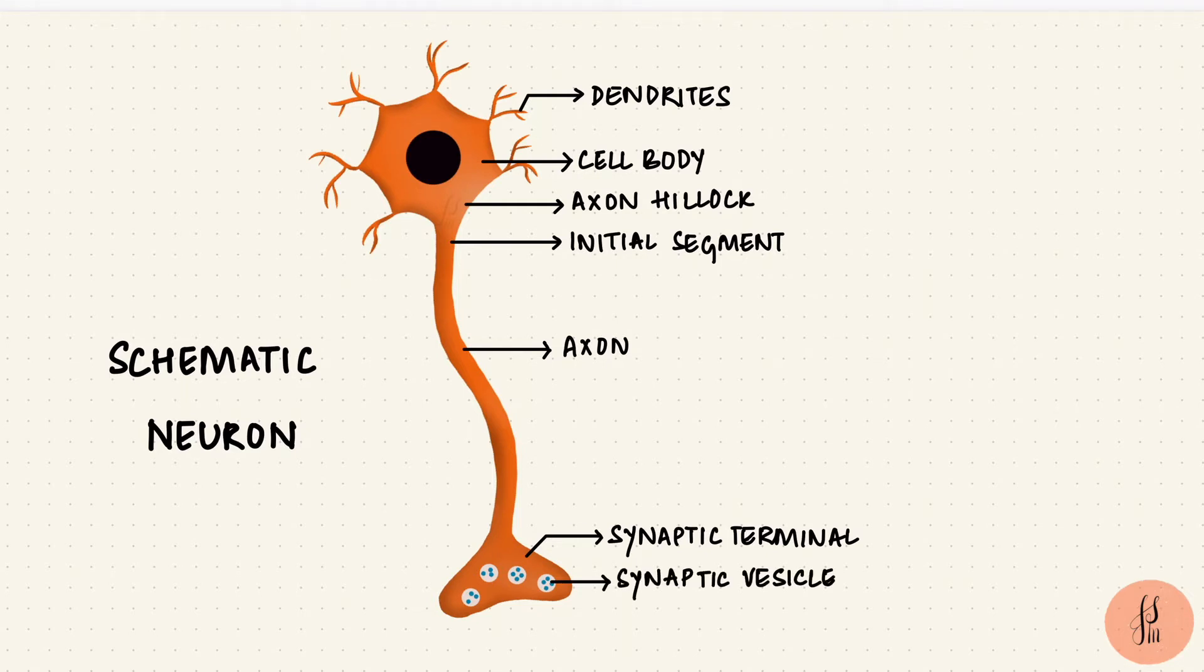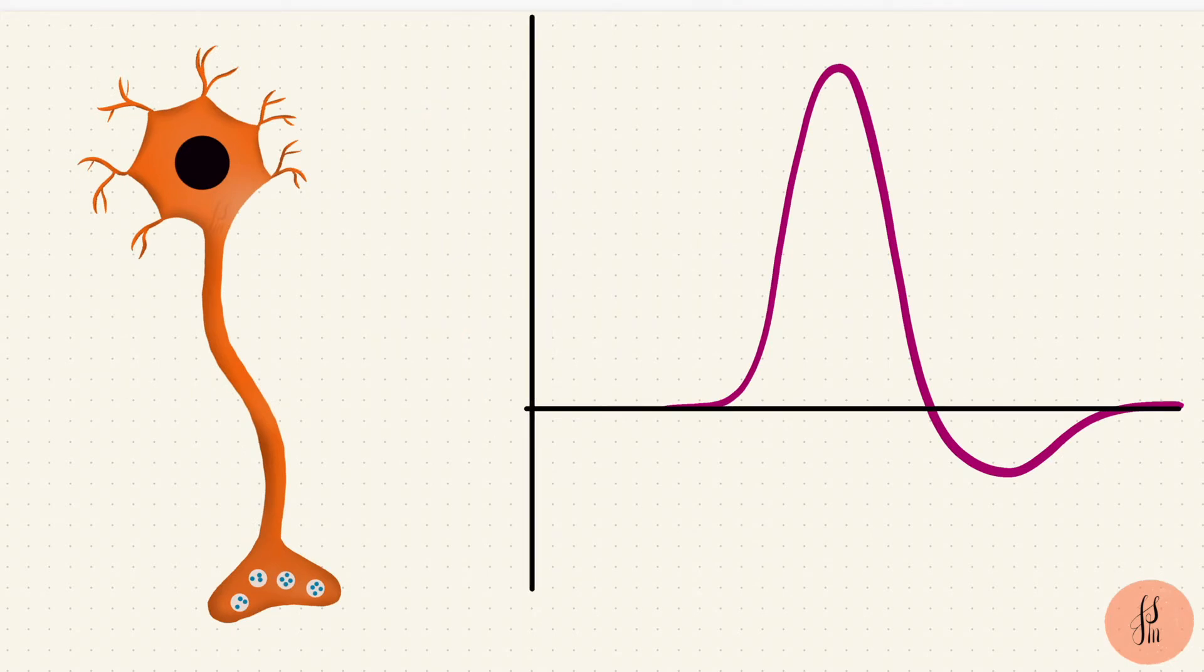The action potential usually starts at the initial segment of the axon, and I'll explain why that is in a bit. We start at rest. At rest, the membrane is at resting membrane potential, the RMP, which is around negative 70 mV for most neurons. This potential is going to change and come back to the RMP again. At rest, the membrane is more permeable to potassium than sodium.